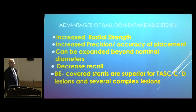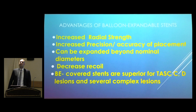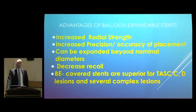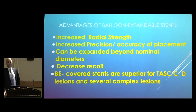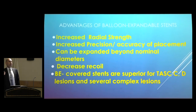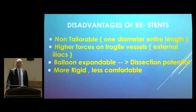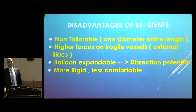Now, a brief discussion on balloon-expandable versus self-expandable stents. Balloon-expandable stents have increased radial strength, increased precision and accuracy of placement, and can be expanded beyond nominal diameter, though they do foreshorten when over-expanded. They have decreased recoil, and balloon-expandable covered stents are superior in certain TASC classifications — especially with circumferential calcium where artery rupture is a risk. However, they are non-tailorable, with higher forces on fragile vessels like the external iliac, and are more rigid and less conformable.